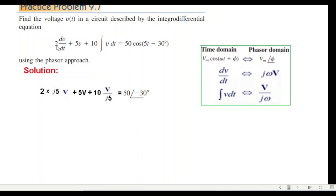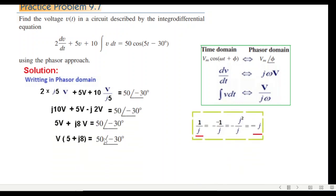And using this formula, you can see 2 dv/dt. dv/dt is jωv. So 2jω, how much is omega? 5jωv plus 5v plus 10 integral v dt will be v over jω, that is v over j5. And this converted into phasor will be 50∠-30°.